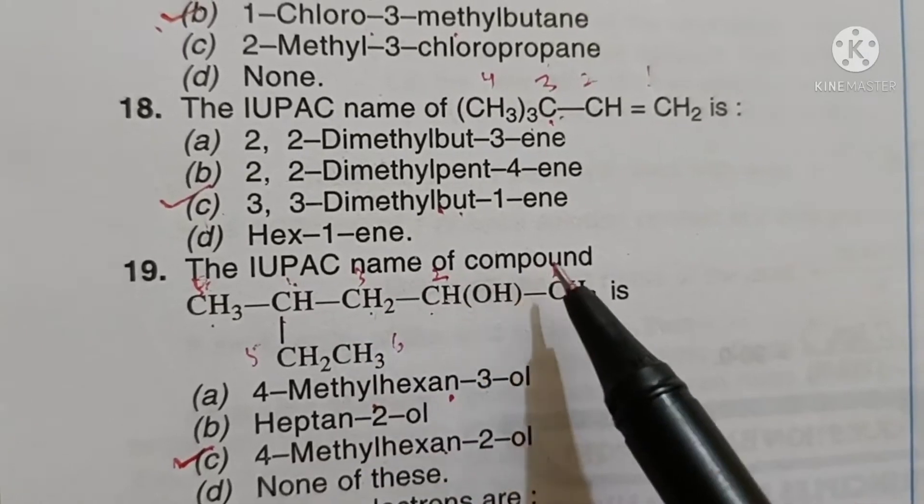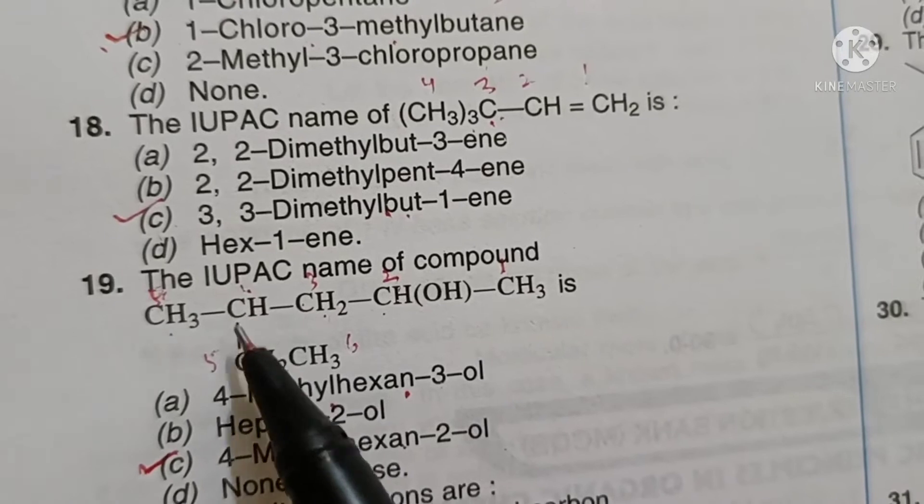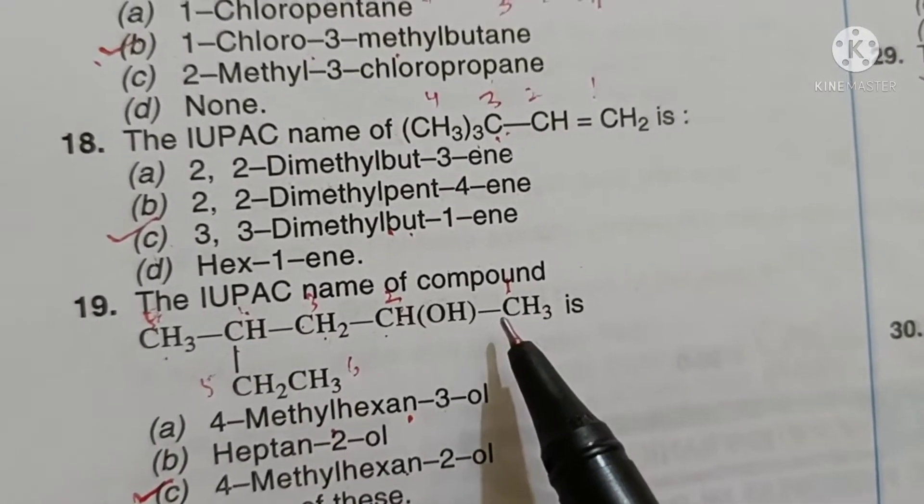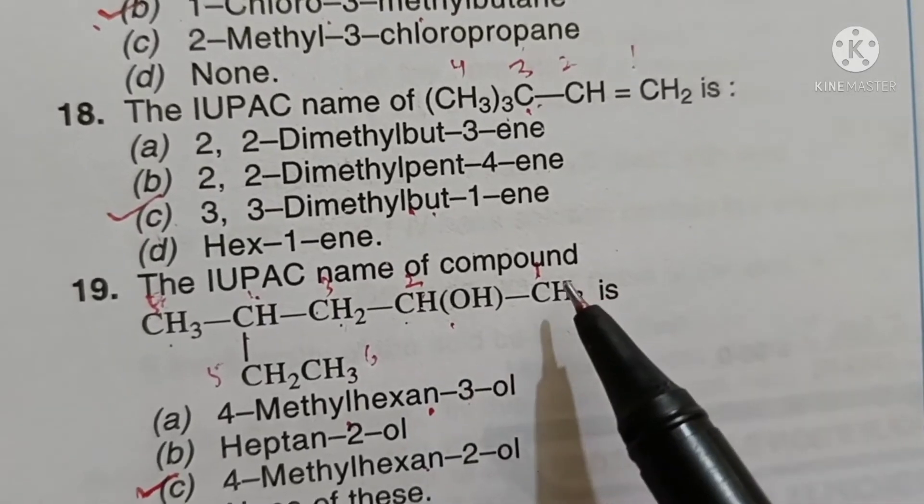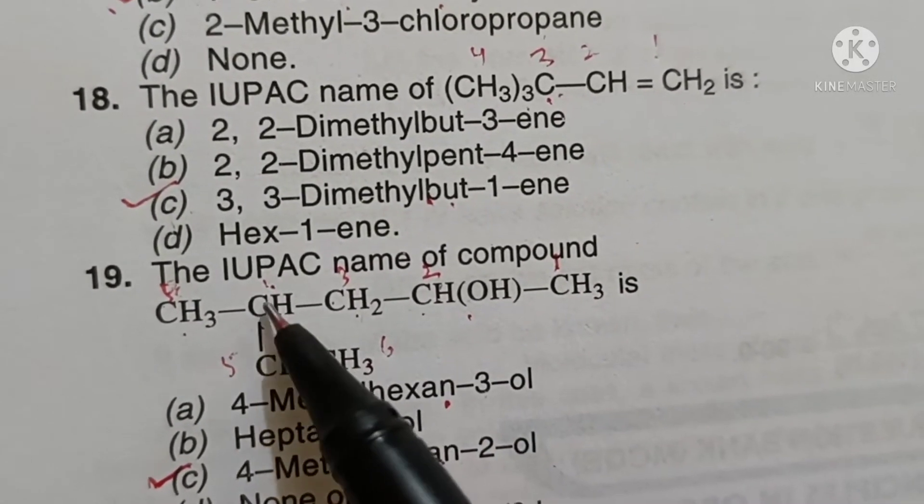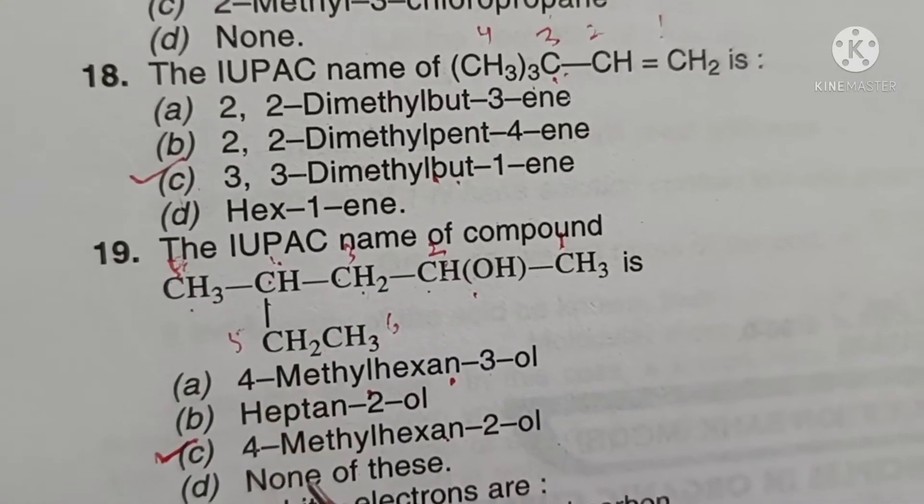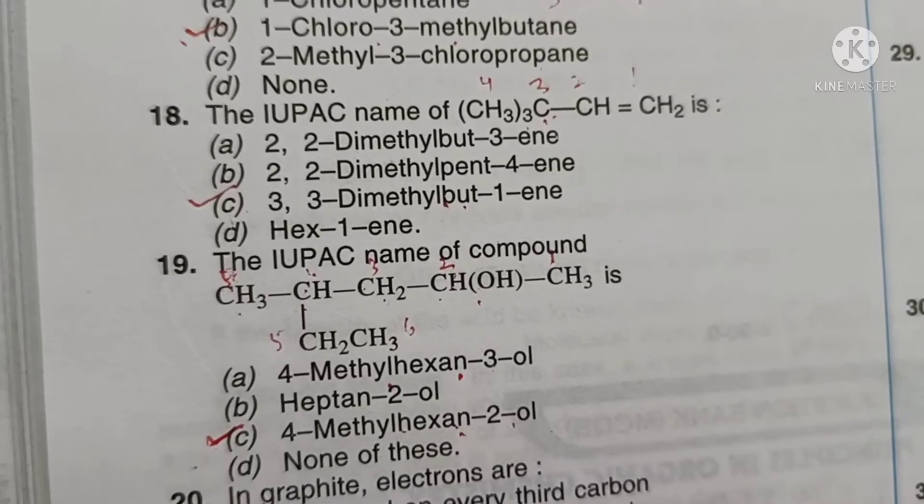The IUPAC name of compound - longest chain 1, 2, 3, 4, 5, 6. Numbering from this end because it's closest to the functional group. On fourth we have methyl, so name will be 4-methyl-hex-2-en-1-ol, option C.